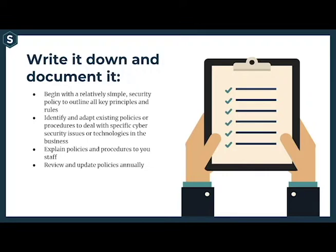Begin with a relatively simple security policy to outline all key principles and rules for cybersecurity within your organization. Identify and adapt existing policies or procedures to deal with specific cybersecurity issues or technologies in your business. You can write your own or contact a third party to develop them for you. Explain policies and procedures to your staff — this will allow them to understand the rationale for rules, who they apply to, and any consequences for failing to follow the policy. It's imperative to review your policies at least once a year so they can always be up to date.